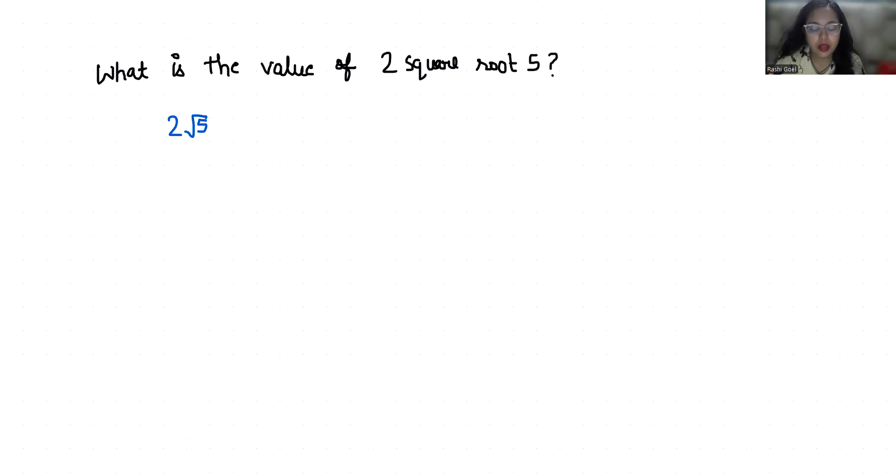So 2 times 2.236 since root 5 is 2.236. So when we multiply this we get 4.472. So we can say that 2 root 5 is approximately 4.472 or we can express it as a single radical expression.